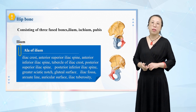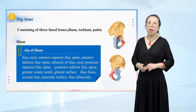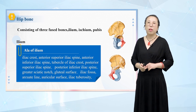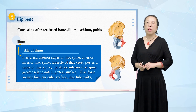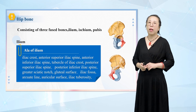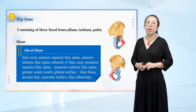The upper edge of the iliac vein is called the iliac crest. Its anterior end is the anterior superior iliac spine, the posterior end is the posterior superior iliac spine, and the posterior protrudes literally 5 to 7 cm posteriorly, called the iliac tubercle.